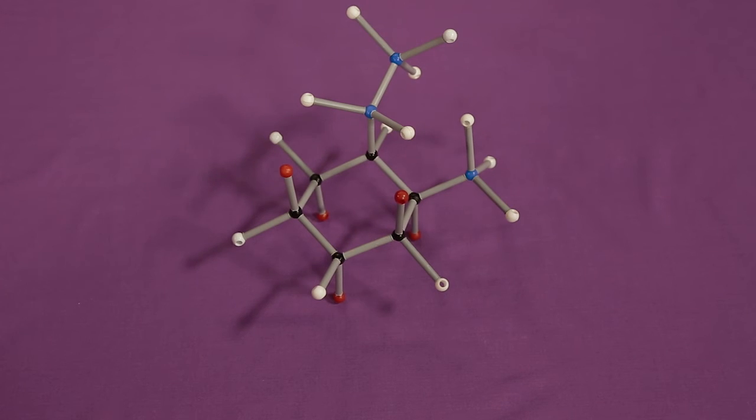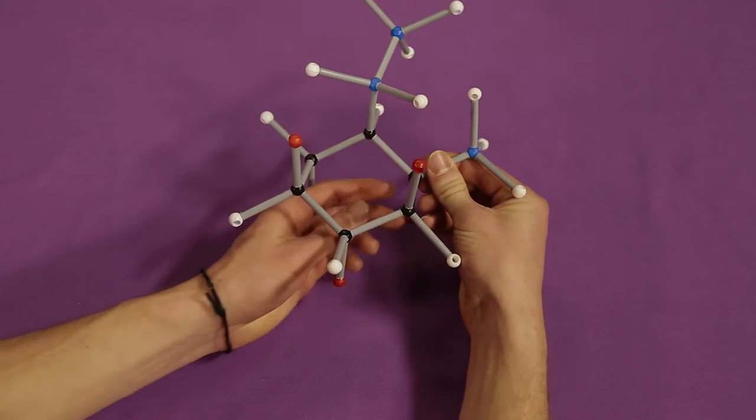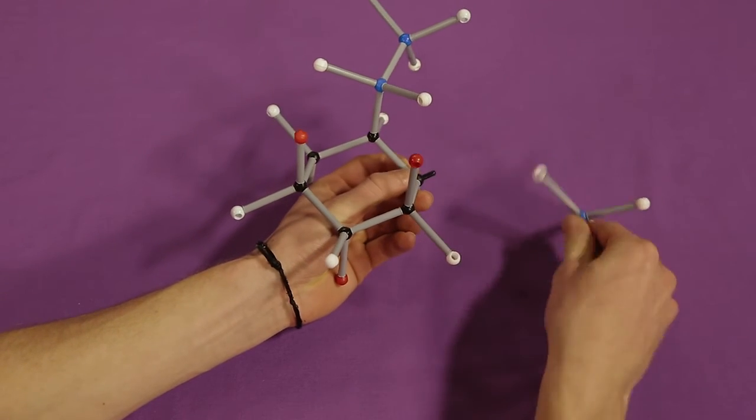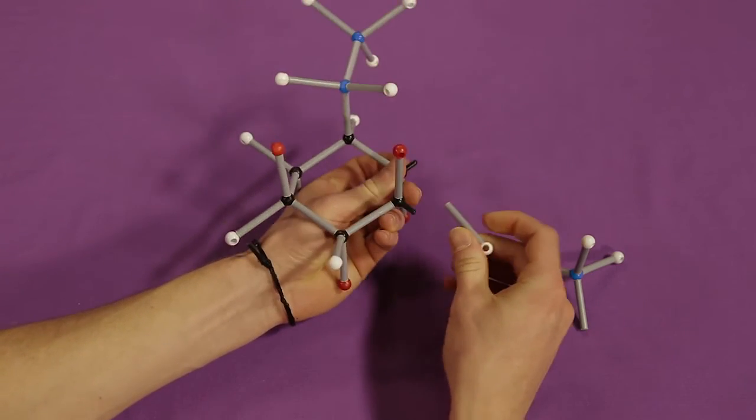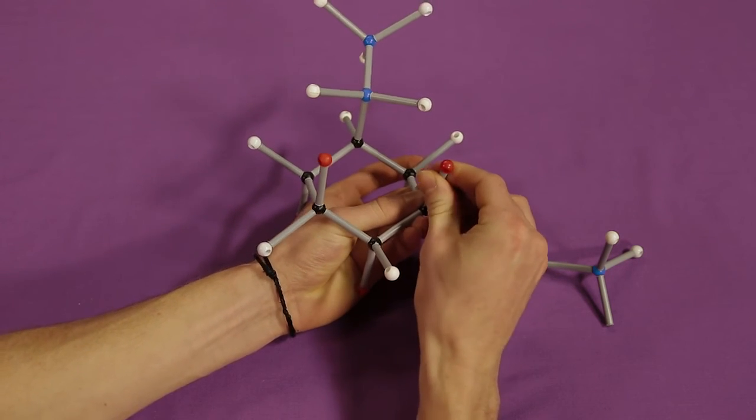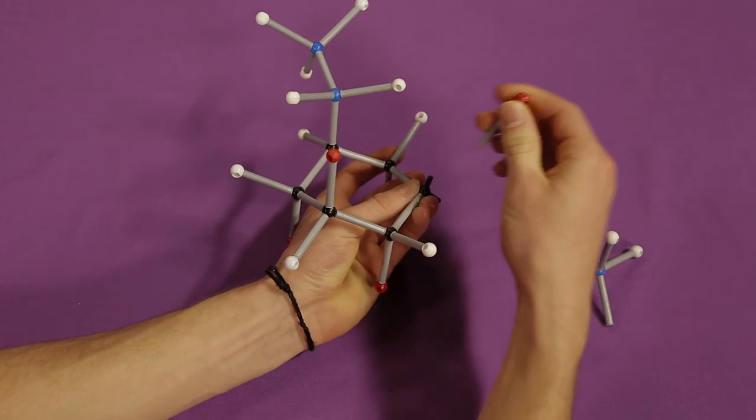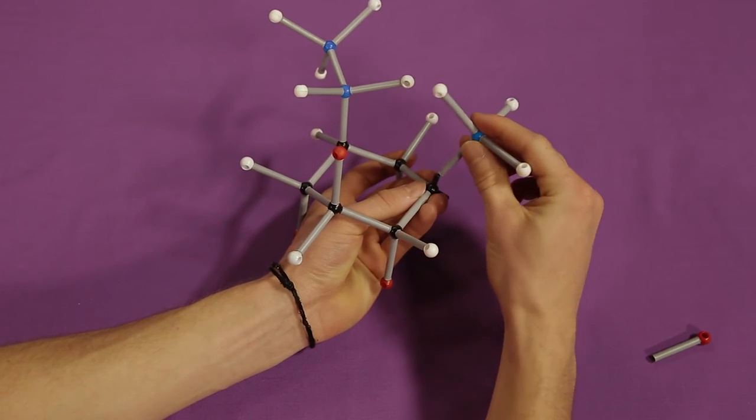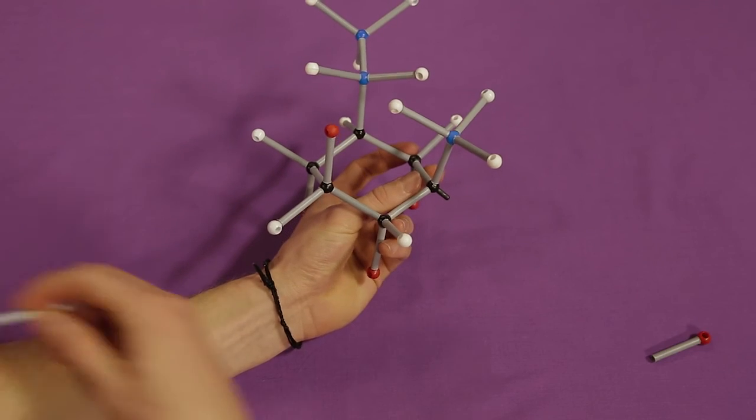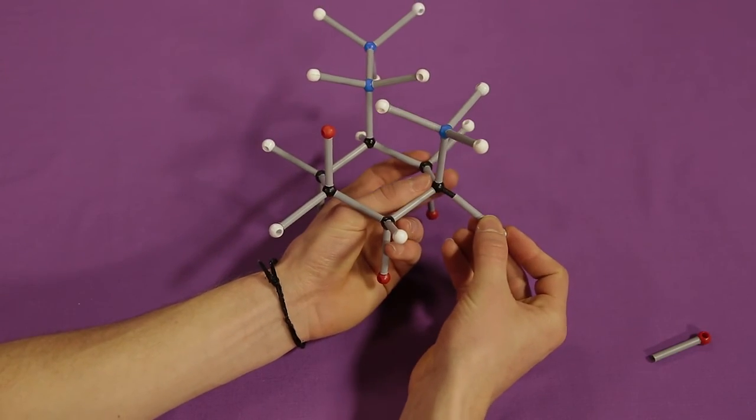Let's try one last example. Move the methyl substituent over so there is one carbon in between the methyl and ethyl substituents. Place it in the axial position.